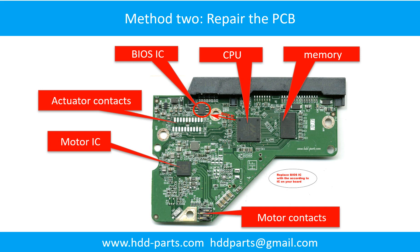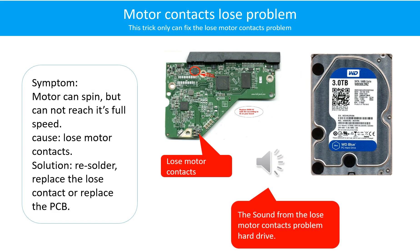This picture shows the basic components on the PCB board. The most vulnerable parts on the PCB board are the power supply circuit and motor IC. Motor contacts loose problem: the motor can spin but cannot reach its full speed.